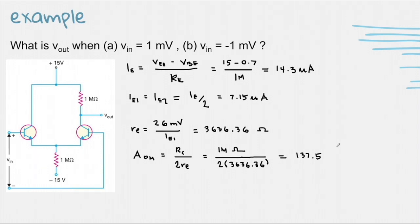And now we can solve for the Vout. The first Vout with an input of 1 millivolt is equivalent to 0.1375 volts. And for the Vout with an input of negative 1 millivolt, the Vout is negative 0.1375 volts.